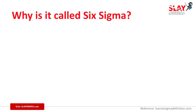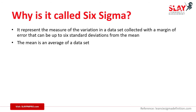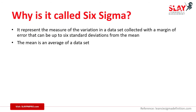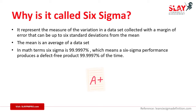Why is it called Six Sigma? It represents the measure of the variation in a data set collected with a margin of error that can be up to six standard deviations from the mean. The mean is an average of a data set — if I have 10 numbers, I add them up and divide by 10, and that produces my average. In math terms, Six Sigma is 99.9997%, which means a Six Sigma performance produces a defect-free product 99.9997% of the time.